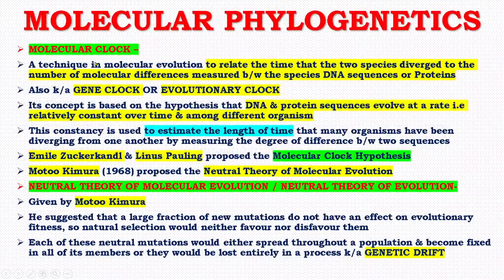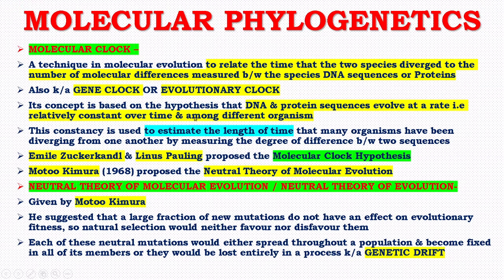Now, come to molecular clock. What is molecular clock and how will you define it? This is a technique in molecular evolution to relate the time that two species diverge to the number of molecular differences measured between the species' DNA sequences or proteins. It is also known as gene clock or evolutionary clock. Its concept is based on the hypothesis that DNA and protein sequences evolve at a rate that is relatively constant over time and among different organisms. This constancy is used to estimate the length of time that many organisms have been diverging from one another by measuring the degree of differences between two sequences.